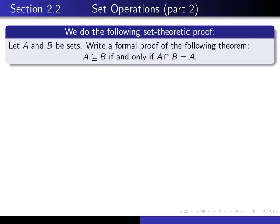That's a biconditional statement. In order to prove it, you have to do two things. First, you have to show that if A is a subset of B, then A intersect B is equal to A. And once you're finished doing that, you have to show that if A intersect B is equal to A, then A must be a subset of B.